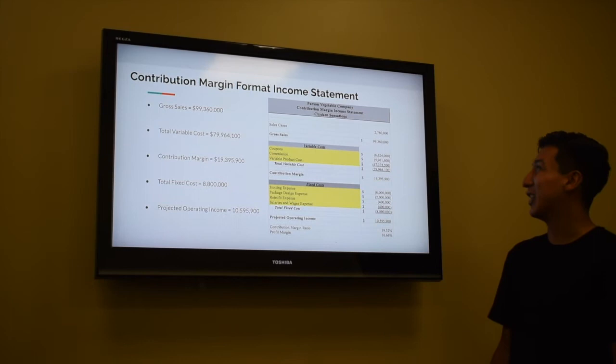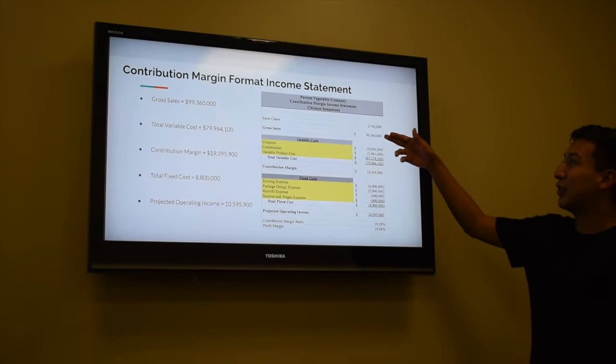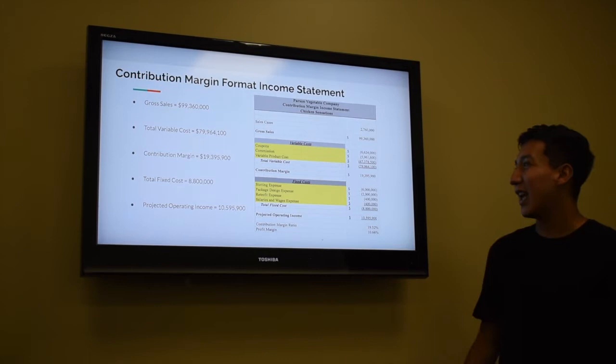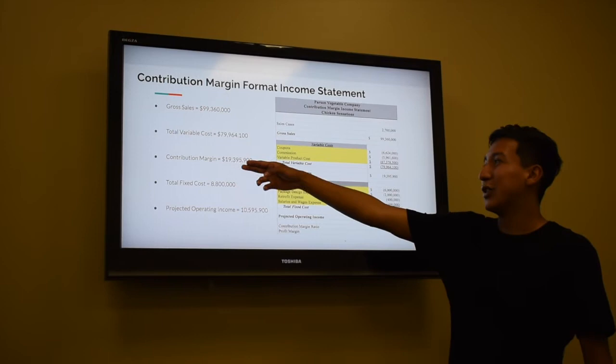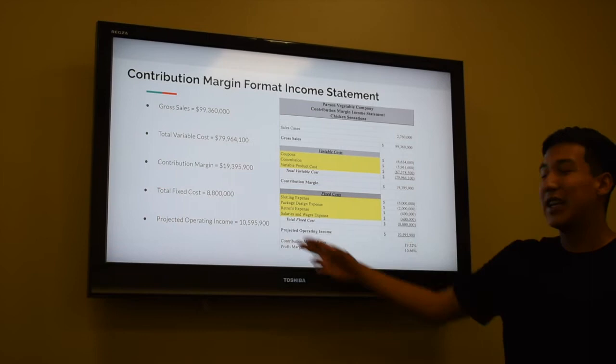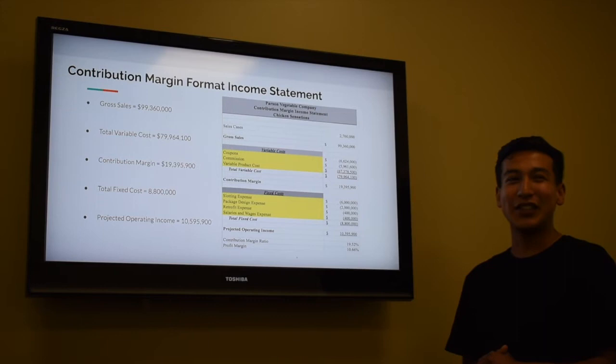Based on the Parsons Vegetable Company contribution margin income statement, it gives you the amount of cases that would need to be sold. Gross sales of $99,360,000, and total variable costs would be $79,000,000, which gives you a contribution margin of $19,395,900. When you take out your fixed costs, you still get a projected operating income of $10,595,900, so launching the product would be successful and give you increased income.